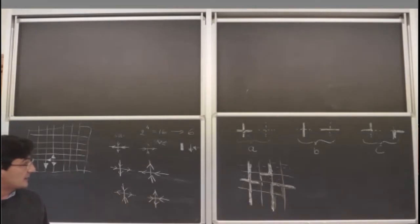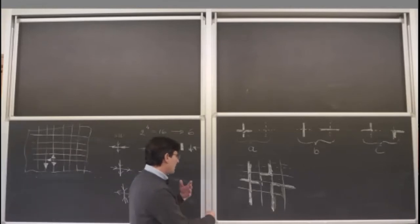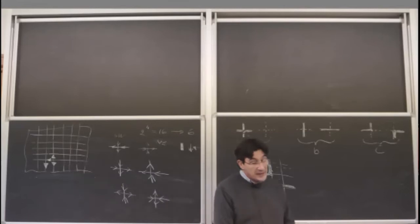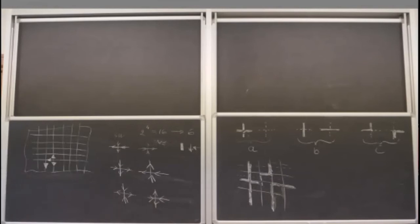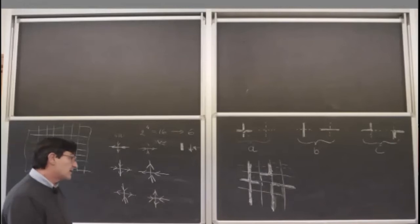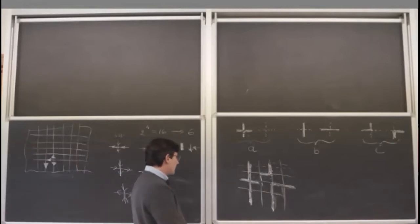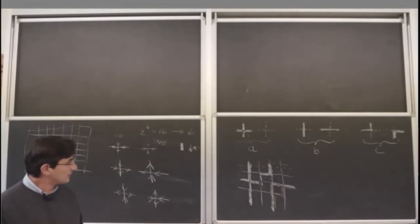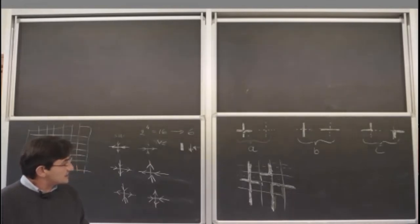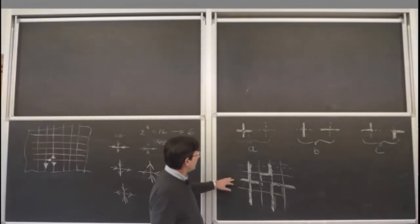The model was solved in the sense that the free energy was evaluated, via a coordinate Bethe ansatz, because it appears there is some underlying algebraic structure. You can compute the transfer matrix, and you see that the eigenvectors of the transfer matrix of the six-vertex model are exactly the same as the eigenvectors of the Hamiltonian of the XXZ chain. There is a strong relation between the six-vertex model and the XXZ chain.